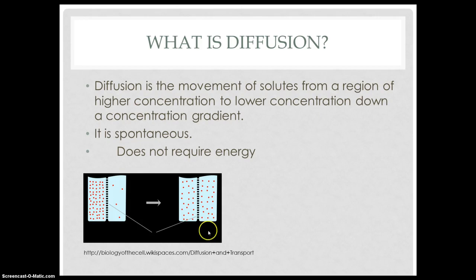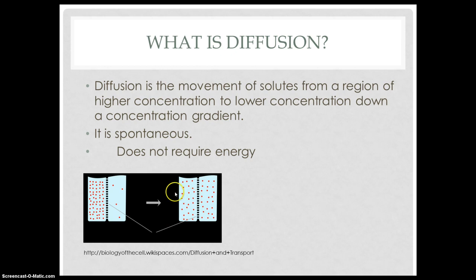As you can see in the picture on your lower left-hand corner, in the beginning, the left side of a membrane had a greater concentration of a certain solute than the right side of the membrane. But as time elapsed, the molecules diffused so that there was an equal concentration of the molecules on each side of the membrane.